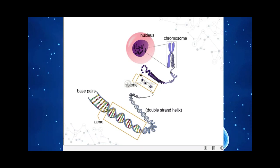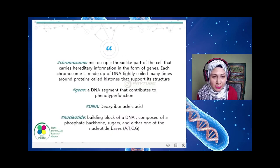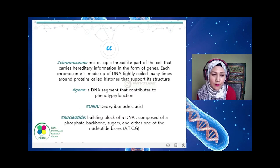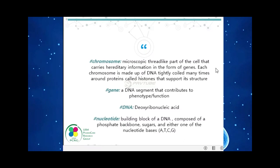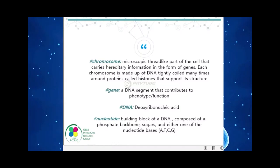Opening it further, we can see it is formed by a double-strand helix, and this double-strand helix is made up of building blocks called nucleotides. A chromosome is defined as a microscopic thread-like part of the cell that carries hereditary information in the form of genes. Each chromosome is made of DNA tightly wound around proteins called histones that support its structure.